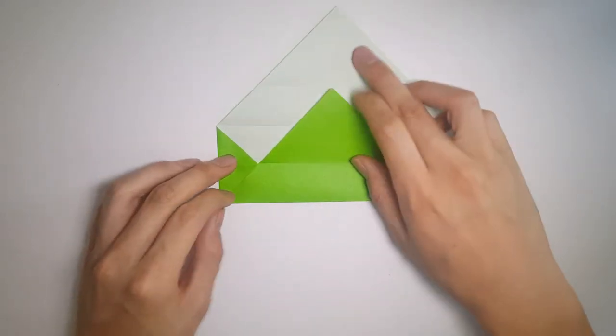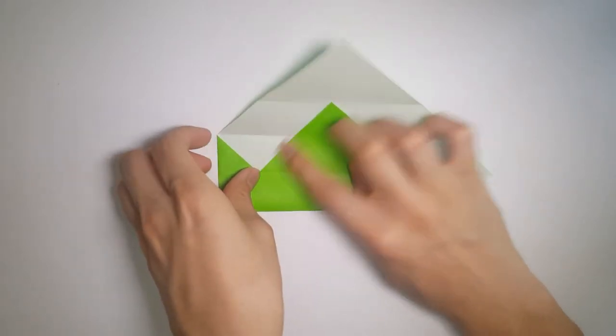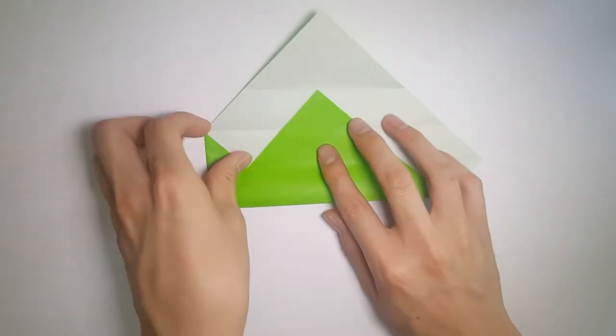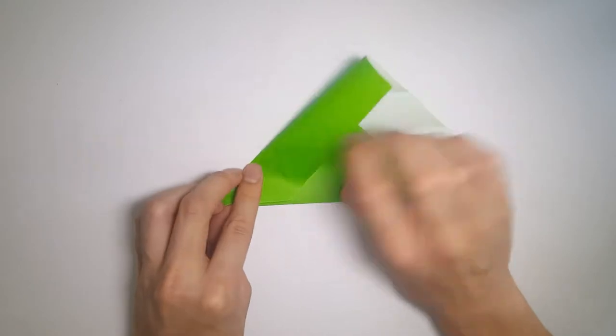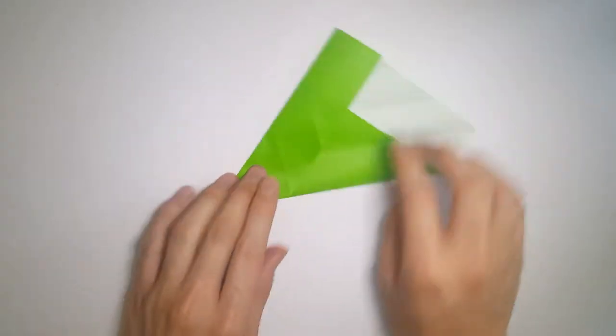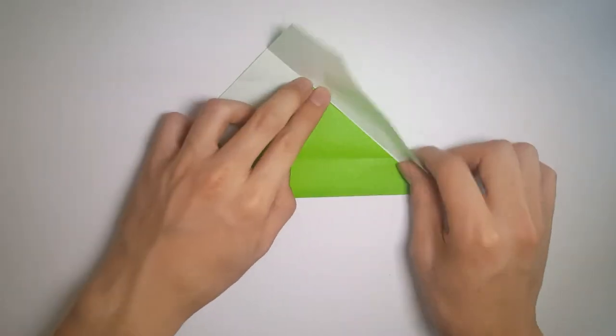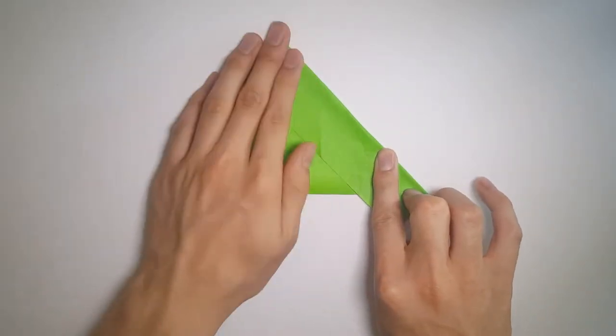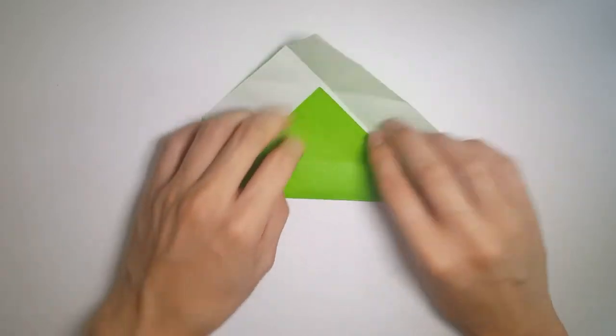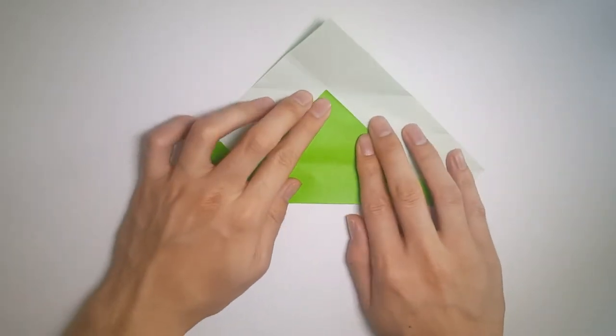Now we're going to make two more creases for the borders. Just fold it and then line it with the triangle. Try and make it as straight as you can. Then we'll go ahead and fold both of them, making sure it's all straight.